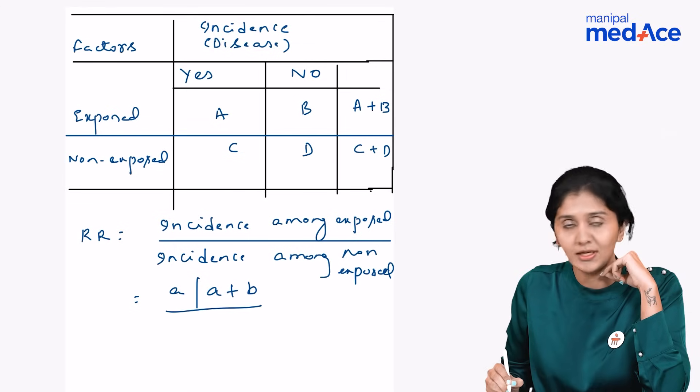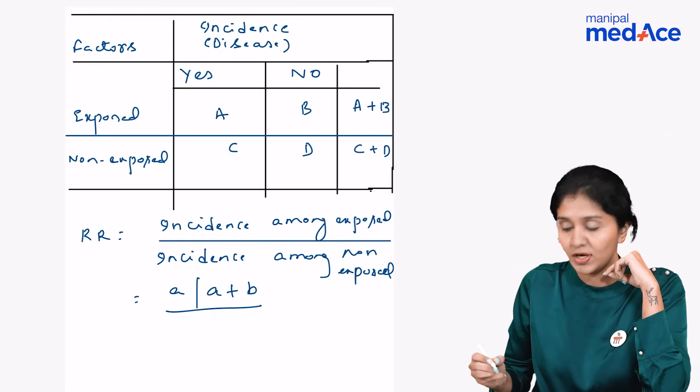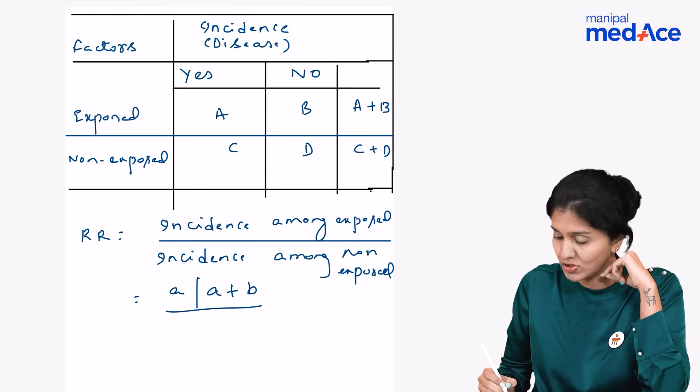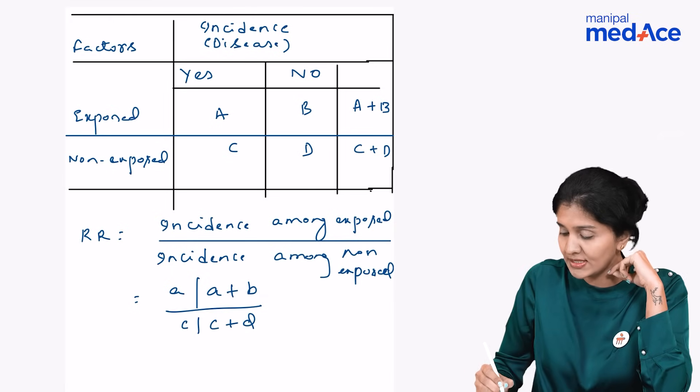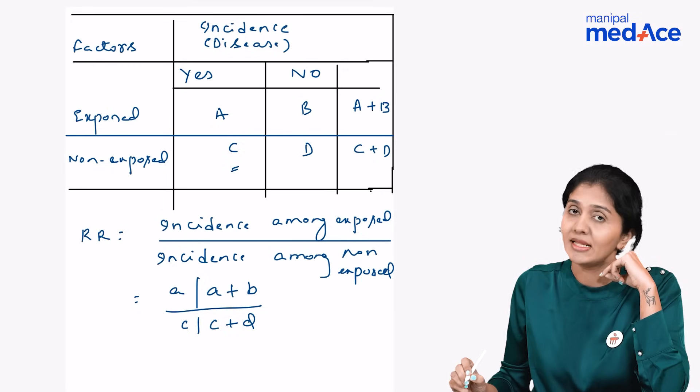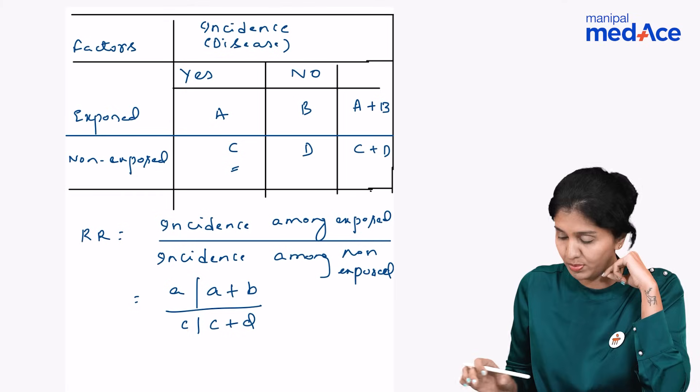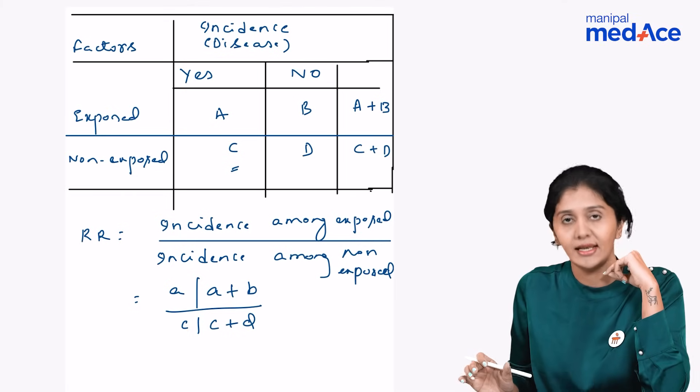Similarly, if you take the denominator incidence among non-exposed, what is the incidence among non-exposed here? c divided by c plus d. c is the number of individuals who are developing the disease. This is in the non-exposed group. So this is the formula to calculate relative risk.